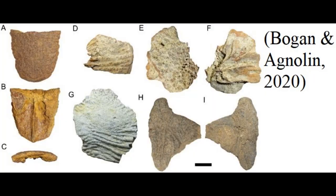Probably the most well-known fossil would be the Acanthicus species from the late Miocene, described and identified by Bogan and Anguilin, extracted from the Piranha formation. This species was identified from the top of the skull only, and the fossil didn't contain many more osteological details, so it cannot be identified or described to a species level — which is quite common with fragmented fossils.